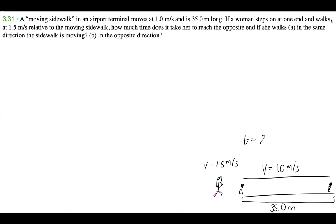We can recognize that this is a relative motion problem, right? Because if the sidewalk is moving at 1.0 meters per second and she steps on and she's moving at 1.5 meters per second relative to the sidewalk, that means that her speed relative to the ground is going to be different. It's going to be a combination of the two somehow. So let's figure it out.